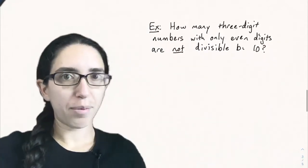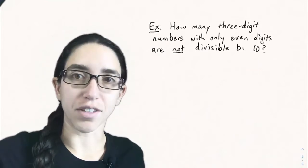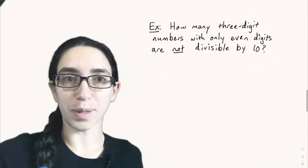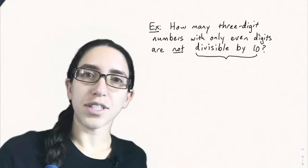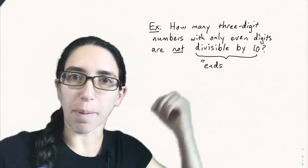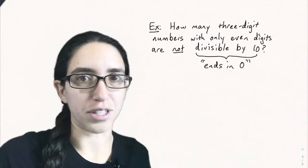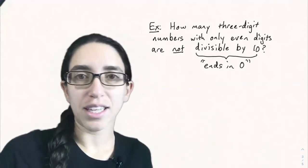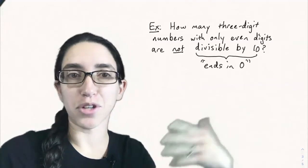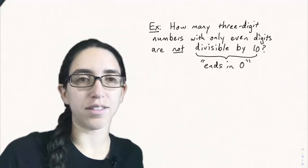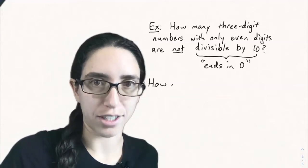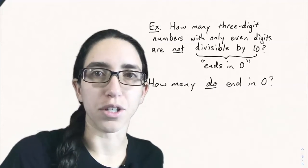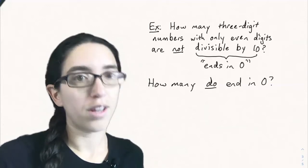Here's another example. How many three-digit numbers with only even digits are not divisible by 10? So when you see not, that's a hint to use subtraction. So here we're going to build up to the subtraction principle. Let's first interpret what we're counting here. The ones divisible by 10, the numbers divisible by 10 are exactly the numbers that end in 0. And so when we want to count the ones that don't end in 0, let's count the ones that do end in 0 and then subtract them from the total. So that's an example of where we might use subtraction in counting. So let's rephrase this again. How many three-digit numbers with only even digits do end in 0?